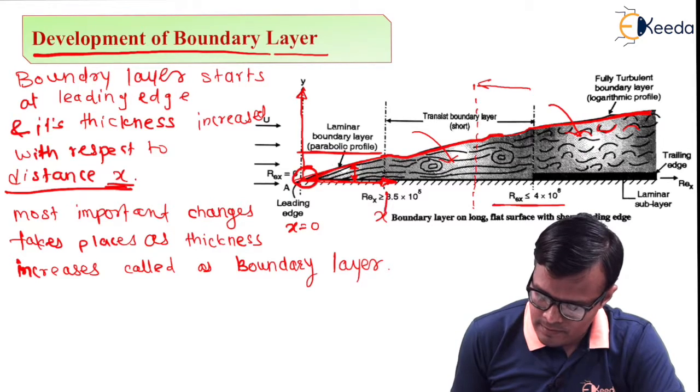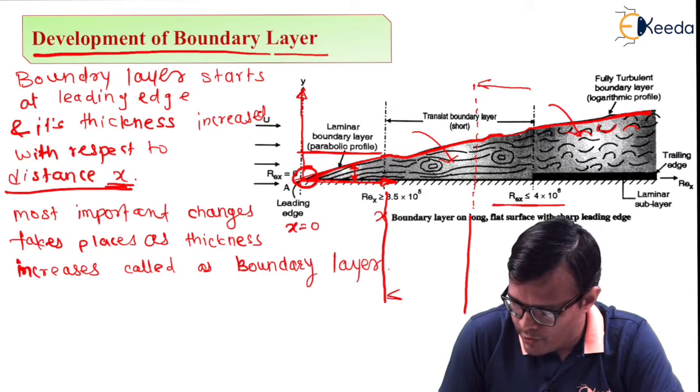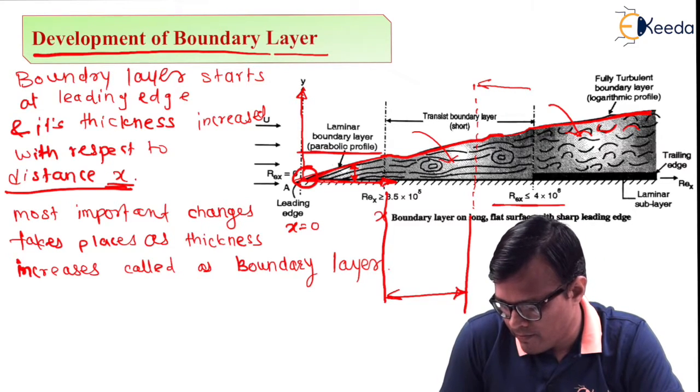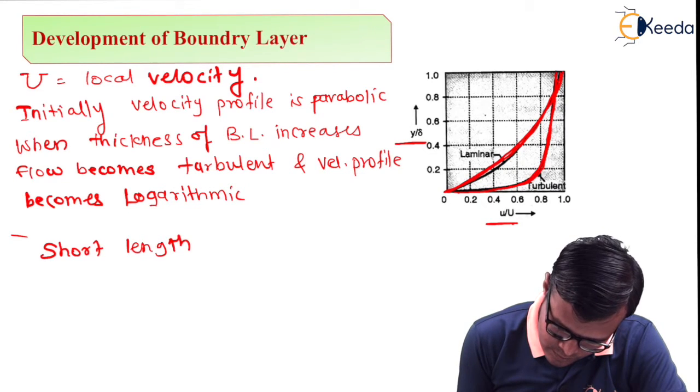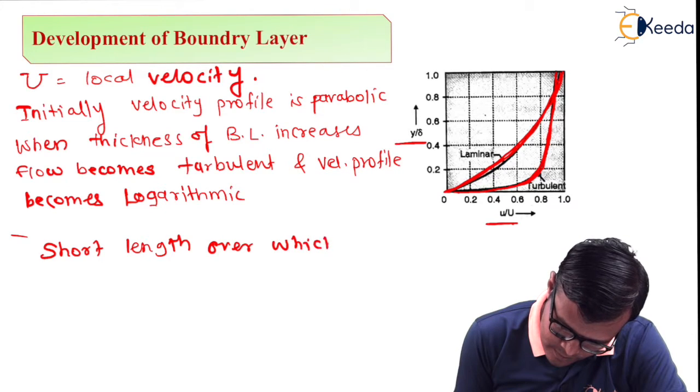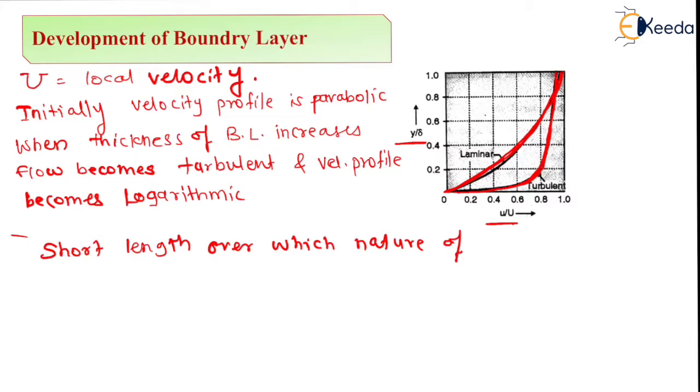There exists a length in which flow actually changes. This is the length in which flow is actually changing from laminar to turbulent. This zone is called the transitional zone. It's a short length over which the nature of flow changes from laminar to turbulent, and is called the transition zone.